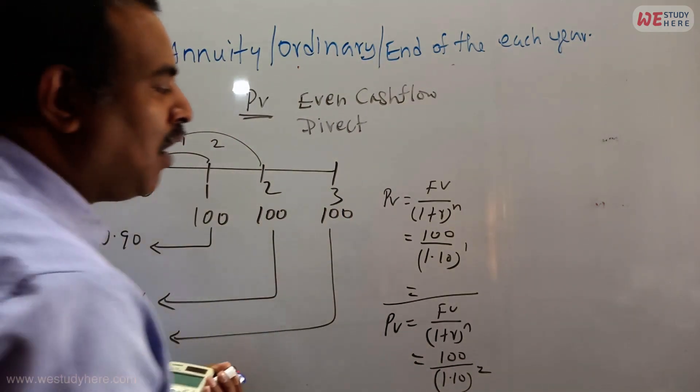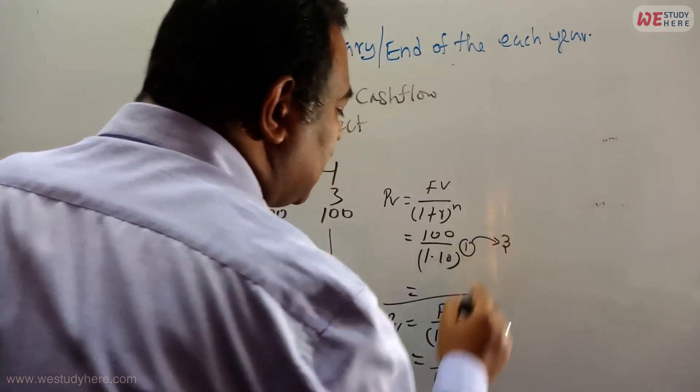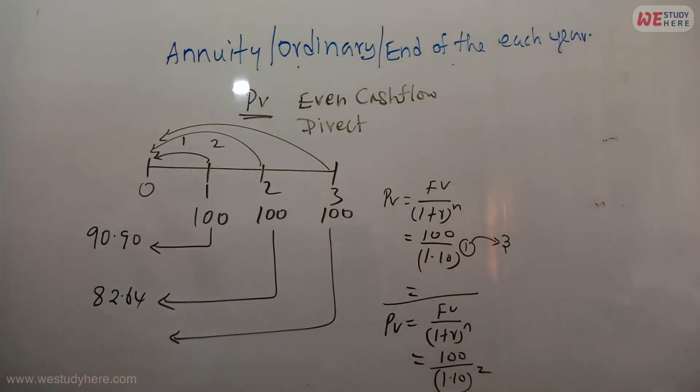What happened now? This one is changed into now how many years? Three years. N is three from here to here, three years. Now again if we do like that, you will get 75.13. Now what is the total?